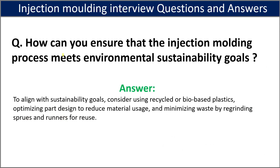The next question is: how can you ensure the injection molding process meets environmental sustainability goals? To align with sustainability goals, consider using recyclable or bio-based plastics, optimize part design to reduce material usage, and minimize waste by regrinding the sprue and runner for reuse.